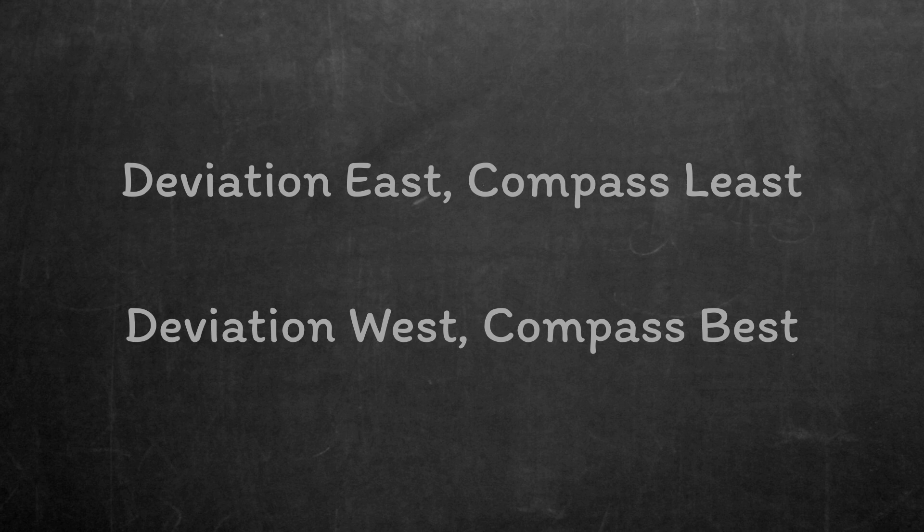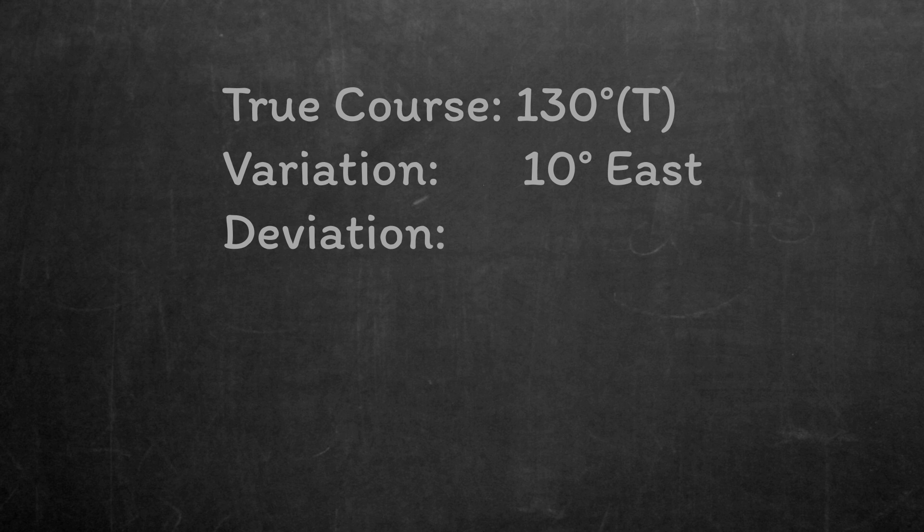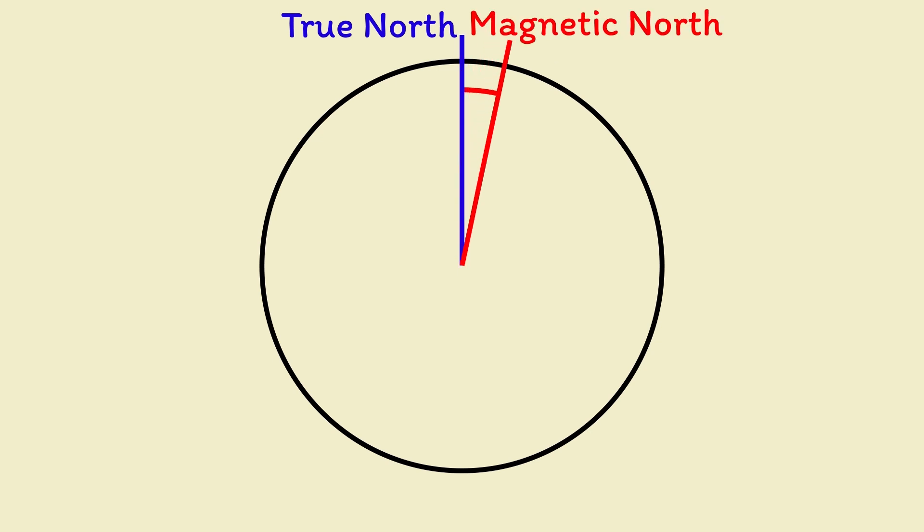So let's look at a few different examples. First off, we want a course of 130 degrees true. Variation is read from the chart as 10 degrees east, and deviation we can read from the compass card as 1 degree east. For a full understanding, we're going to construct the diagram. Now, variation tells us that magnetic north is 10 degrees east of true north. Then deviation tells us that compass north is 1 degree east of magnetic north. The course that we're measuring is 130 degrees true. So the true course was this full angle from true north all the way around to 130 degrees.